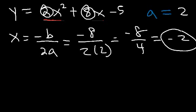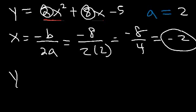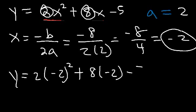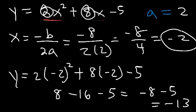Let's plug this value into the original equation to find y. So it's going to be 2 times negative 2 squared, plus 8 times negative 2, minus 5. Negative 2 squared is 4, and 2 times 4 is 8. 8 times negative 2 is negative 16. 8 minus 16 is negative 8. Negative 8 minus 5 is negative 13.